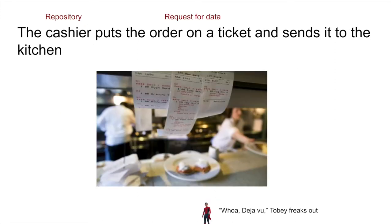The cashier is what we call in BRIC a repository. A repository manages multiple data sources. The cashier puts the order on a ticket and sends it to the kitchen — the repository requests the data from a source or a provider.